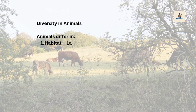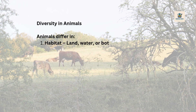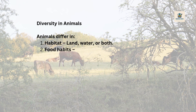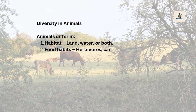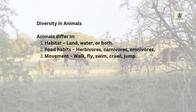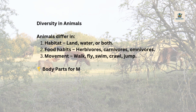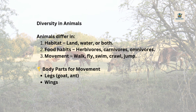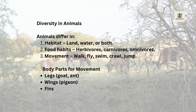Food habits: herbivores, carnivores, omnivores. Movement: walk, fly, swim, crawl, jump. Body parts for movement: legs (goat, ant), wings (pigeon), fins (fish).